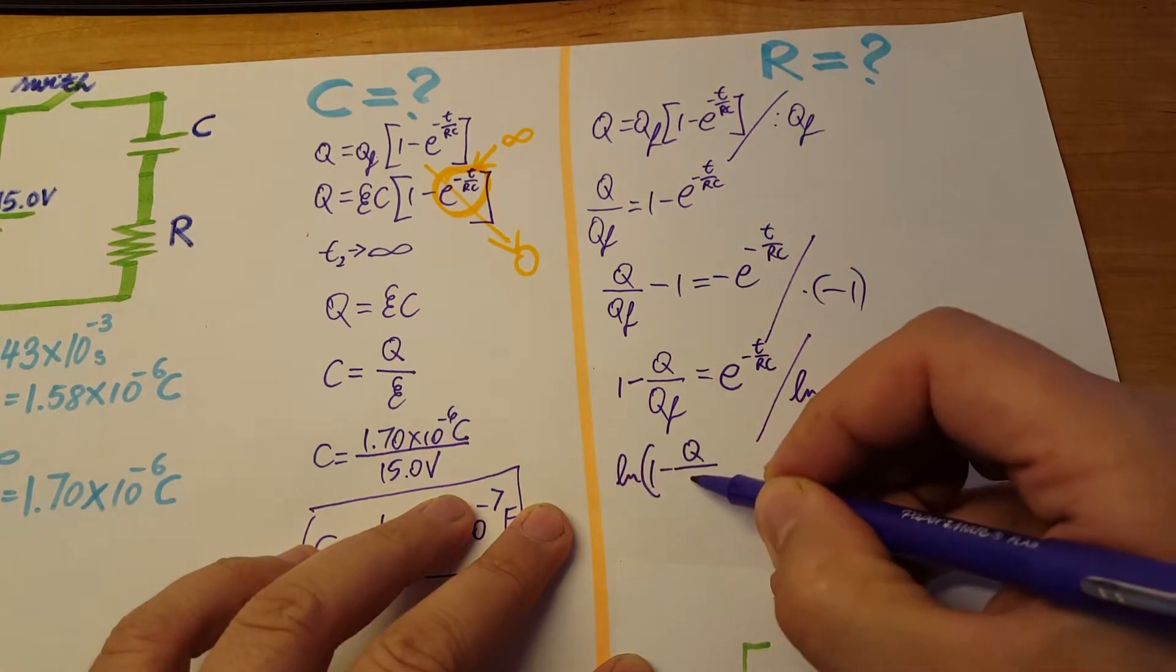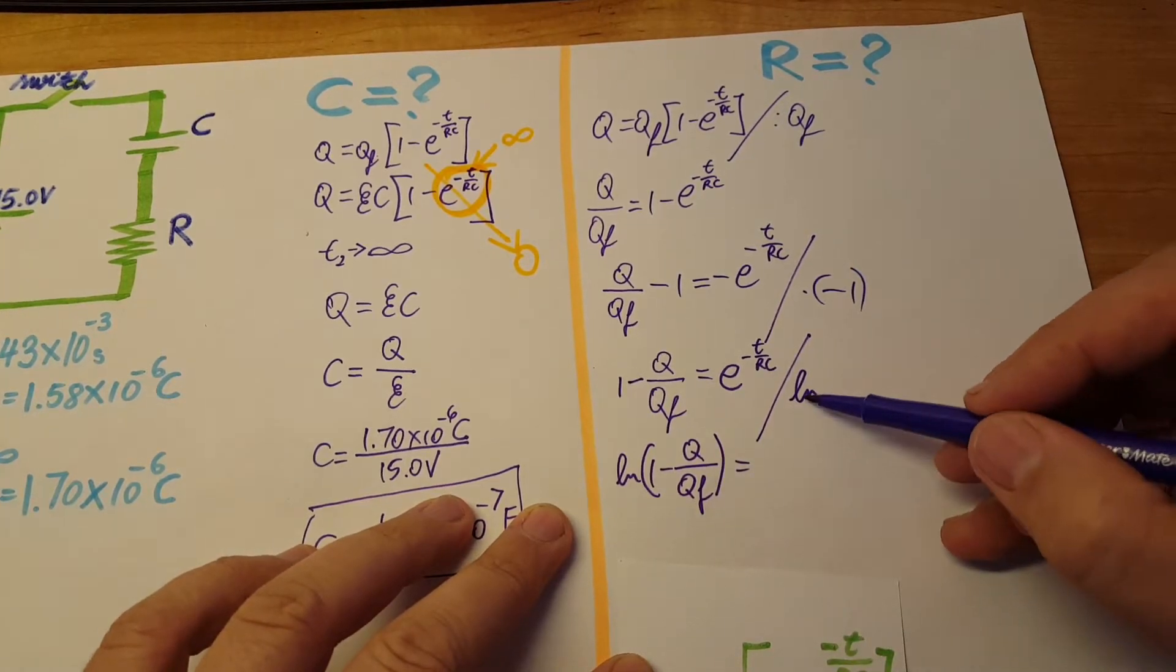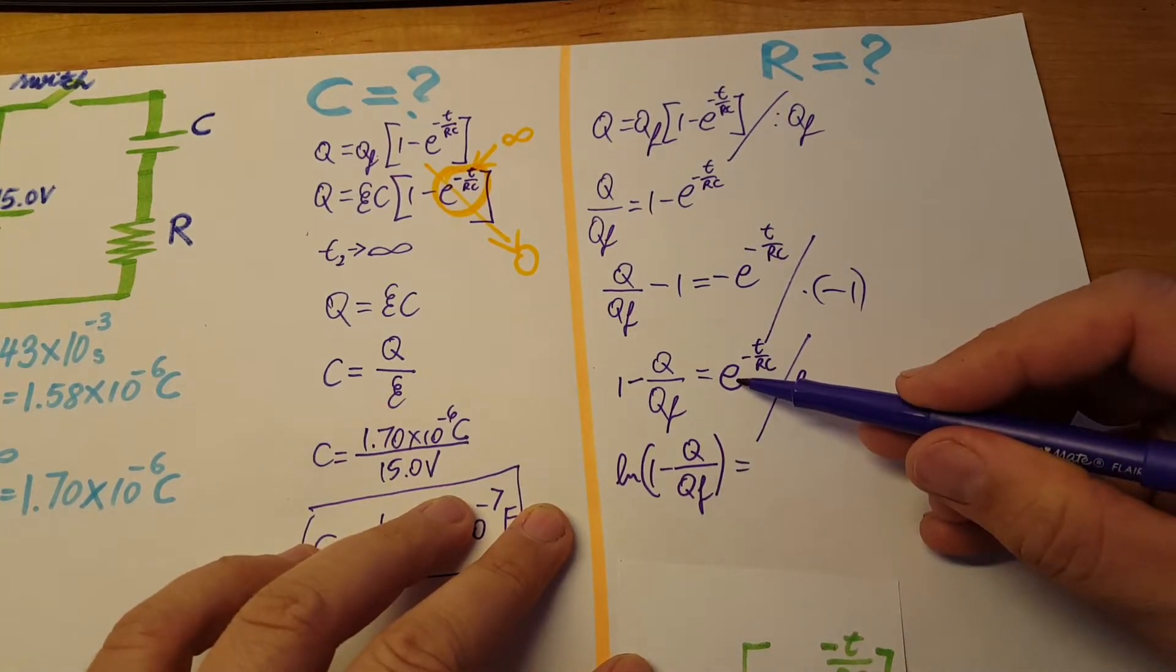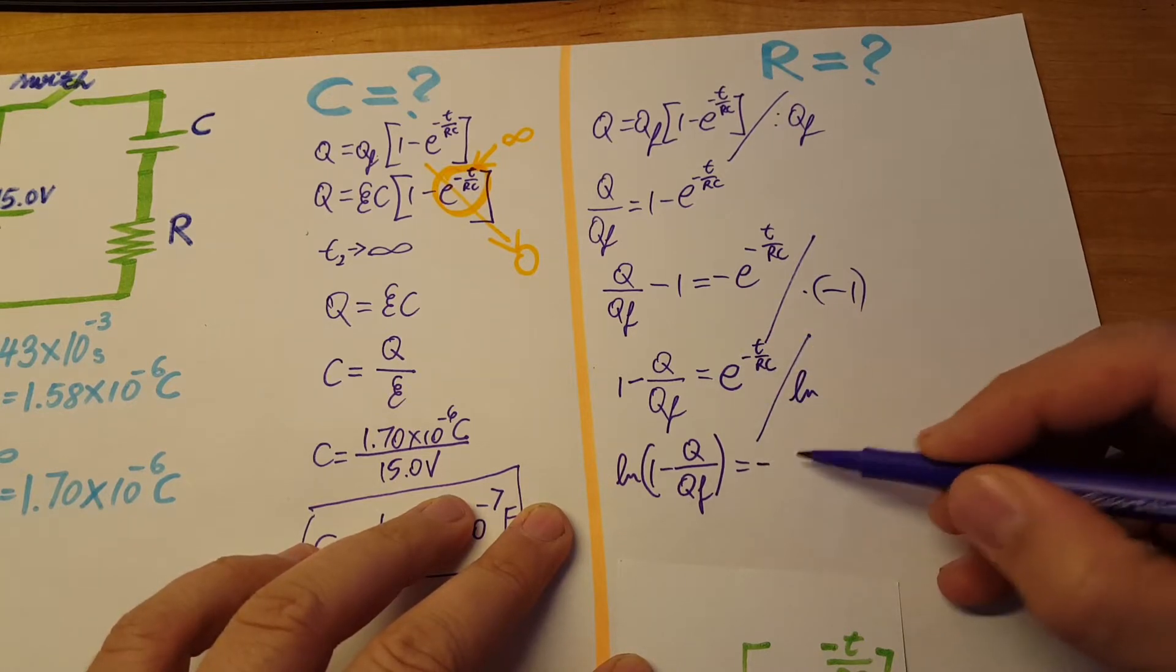We're gonna take the natural logarithm of both sides. LN of one minus Q over Q final equals LN of e - they cancel each other - so all we have left is just the exponent, negative t over RC.